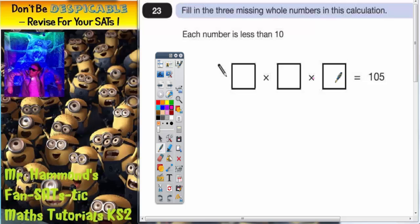So we've got something times something times something equals 105. Now 105 is in the 5 times table, and so one of the numbers will need to be 5 to make it in the 5 times table. So you can put that number in at the end.